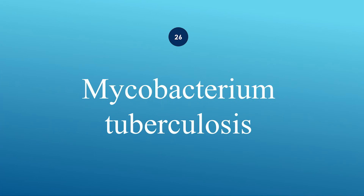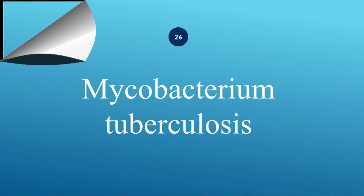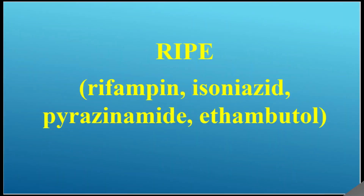How do you treat Mycobacterium tuberculosis? Use RIPE: R for rifampin, I for isoniazid, P for pyrazinamide, and E for ethambutol.